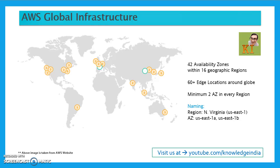Hello, welcome to Knowledge India. In this tutorial we are going to talk about AWS global infrastructure. We'll understand some of the core concepts of AWS like region and availability zone, and we'll try to understand the scope of different services.